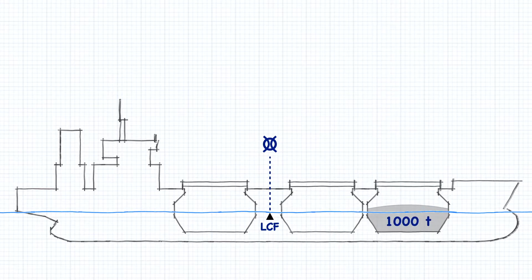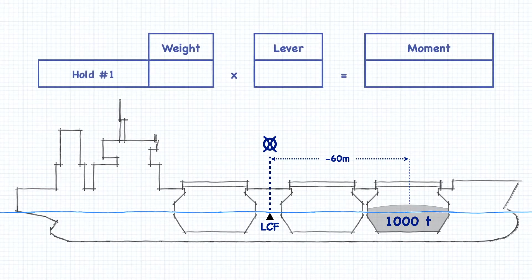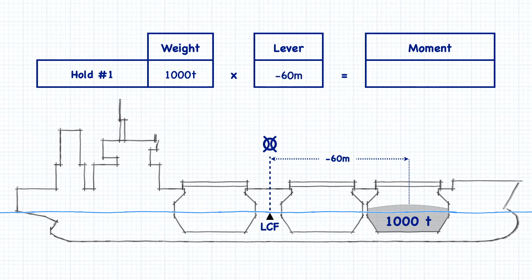We want to add 1,000 tons of cargo into the number one cargo hold and determine how it's going to change our draft and trim. The center of our cargo hold is 60 meters forward of midships, which means that the length of our lever is negative 60 meters. So if we take our cargo of 1,000 tons and multiply it by negative 60 meters, we end up with a turning moment of negative 60,000 ton meters.